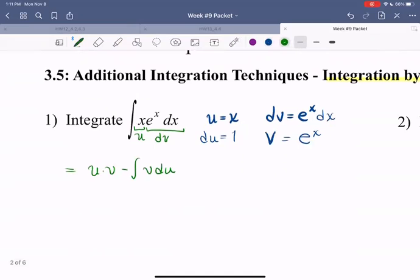So then this integral that I'm trying to compute becomes u times v, which for us is x times e to the x. So I have x times e to the x minus the integral of v, which is e to the x, du, which is just one.